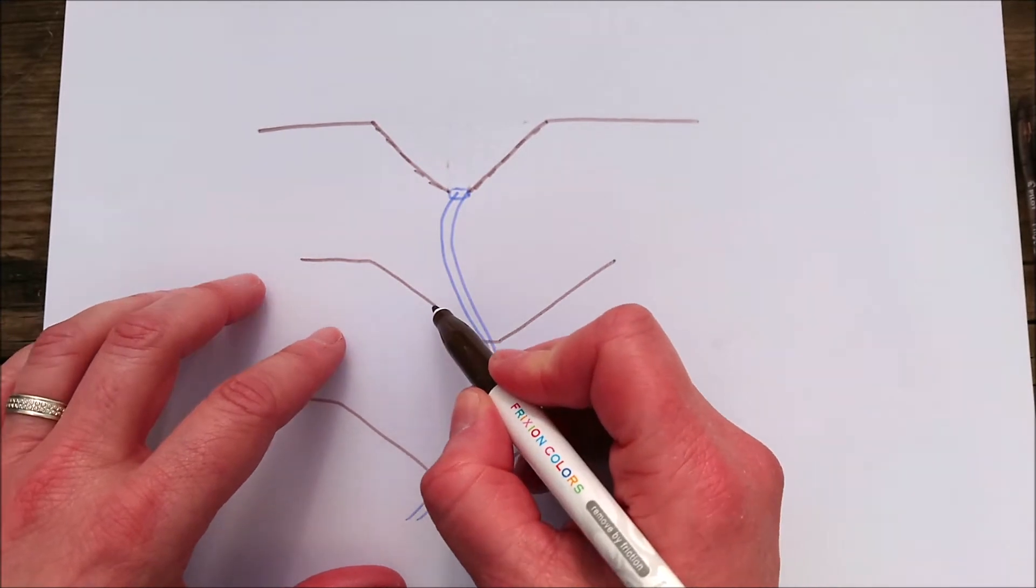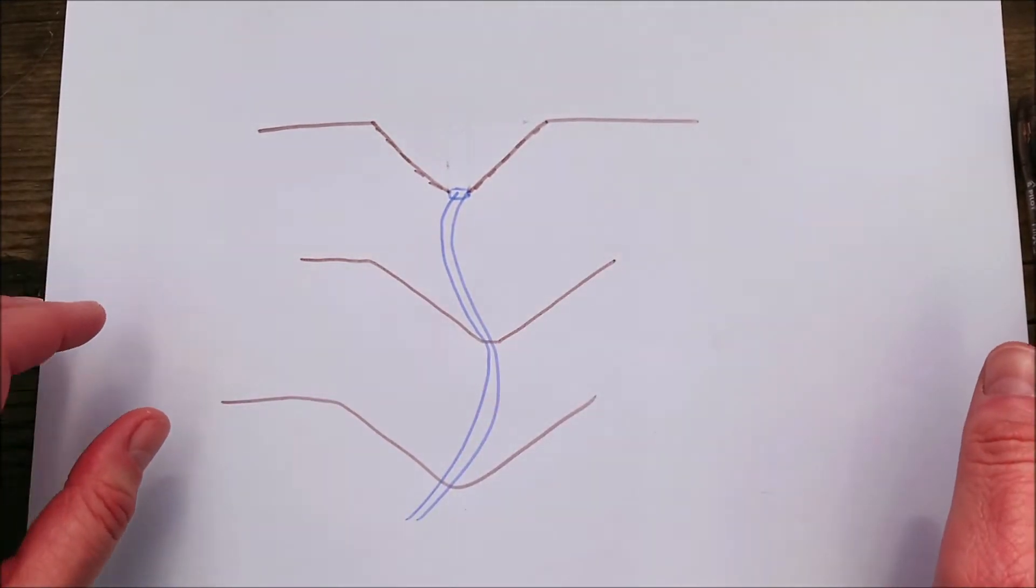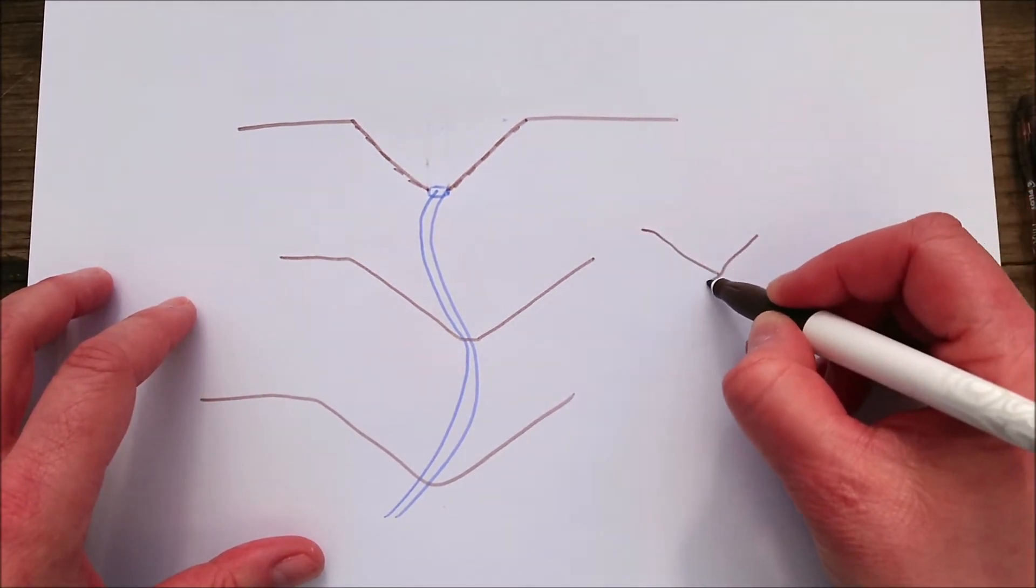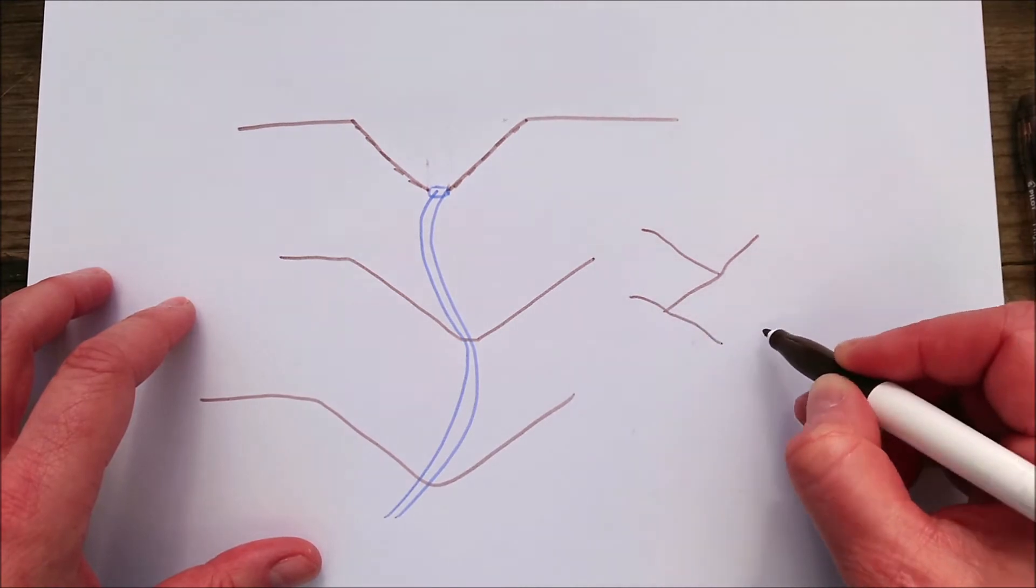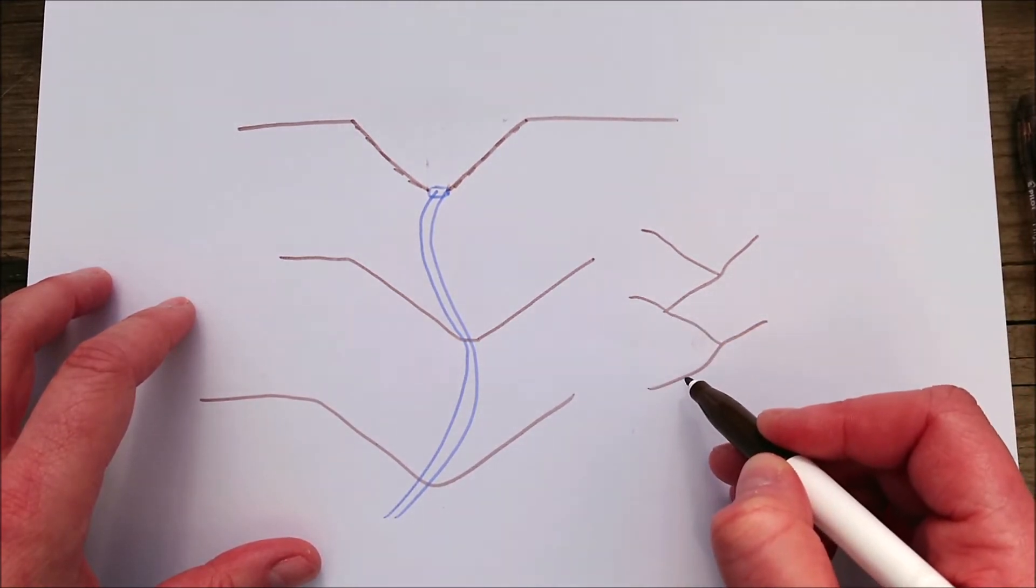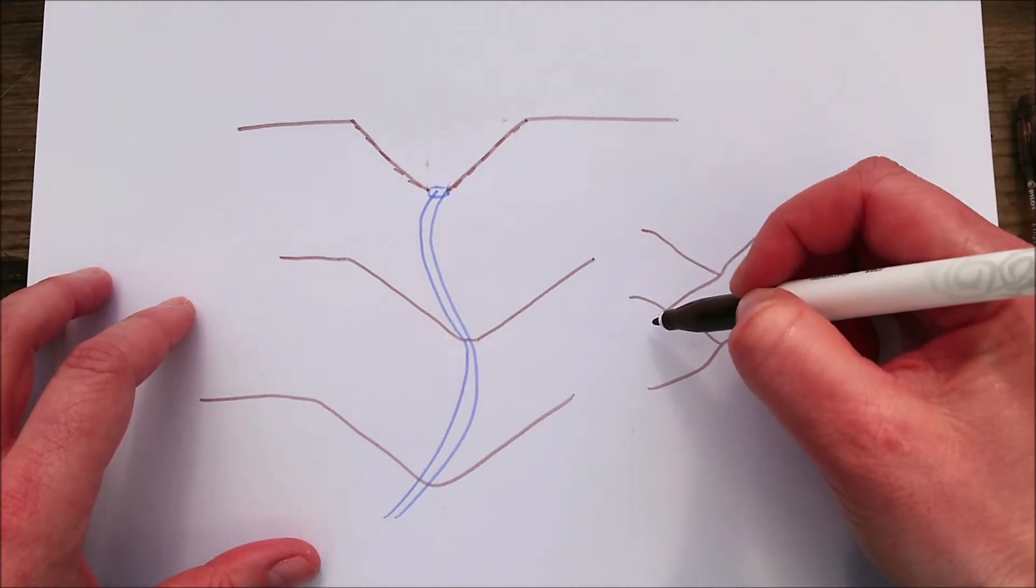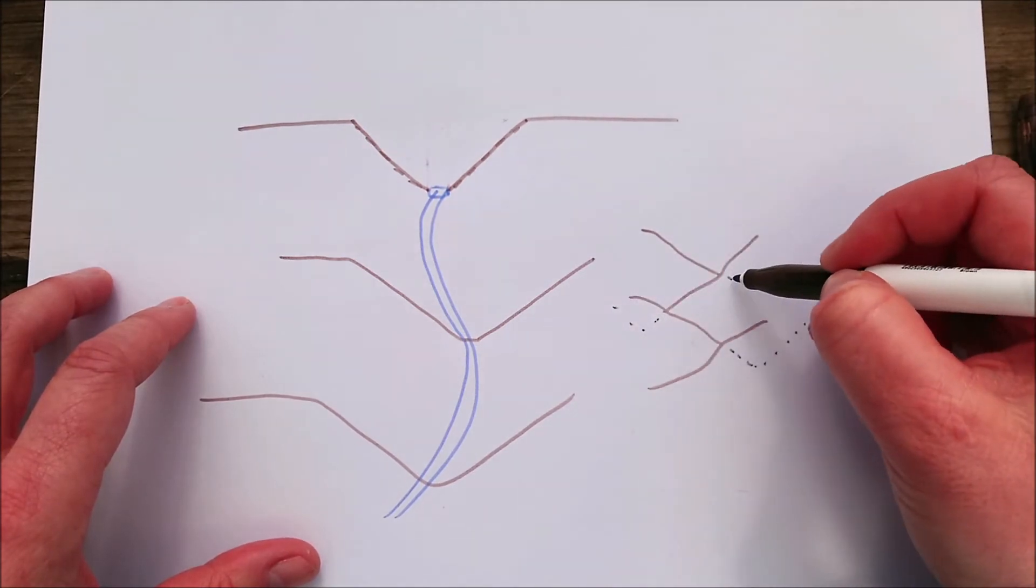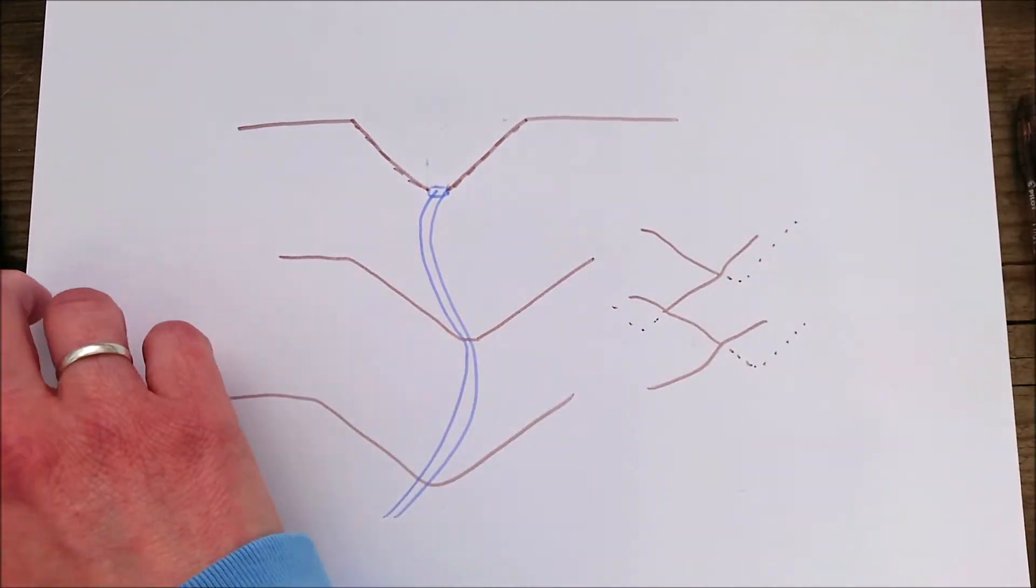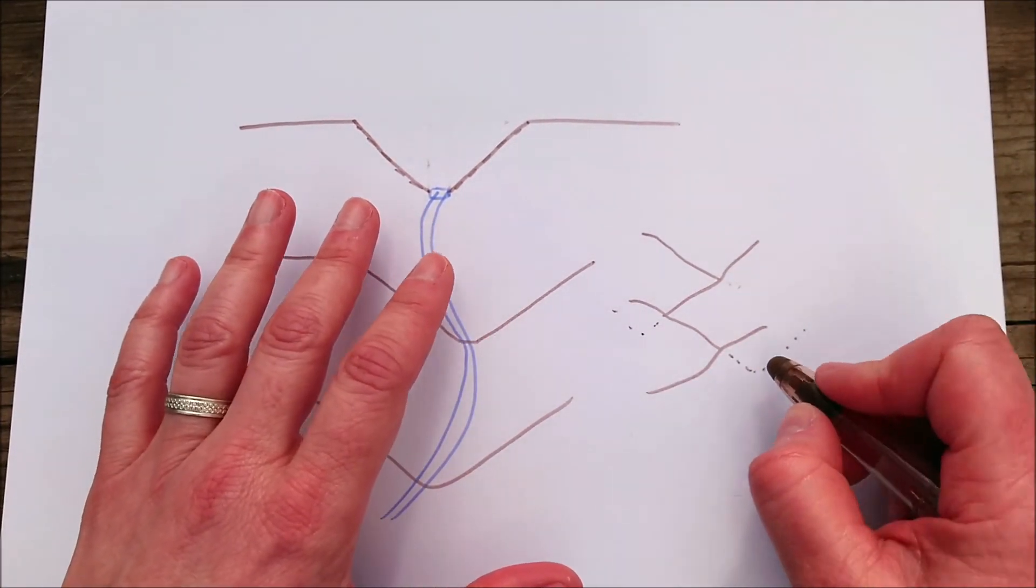Now these bits of land that stick out here and here are called spurs. And if you were to look at them on a side profile, they'd look something like this. So the river would be flowing within there. And each of these are sort of halves of V-shaped valleys. And the river's just winding around and formed this series of interlocking hills.